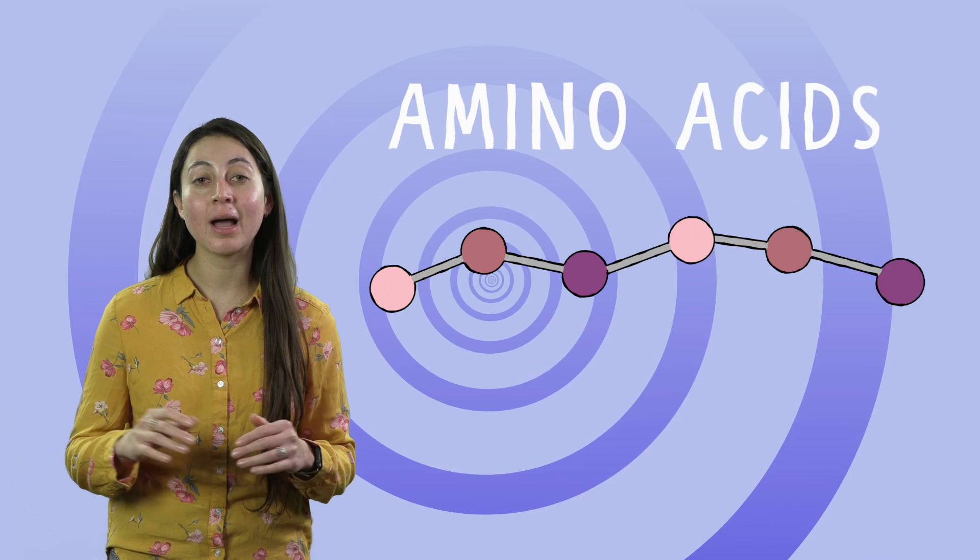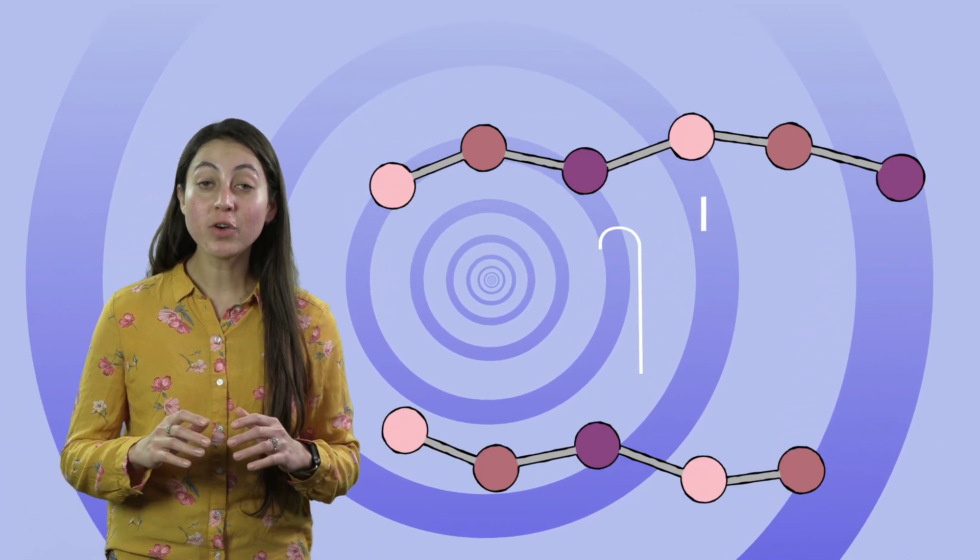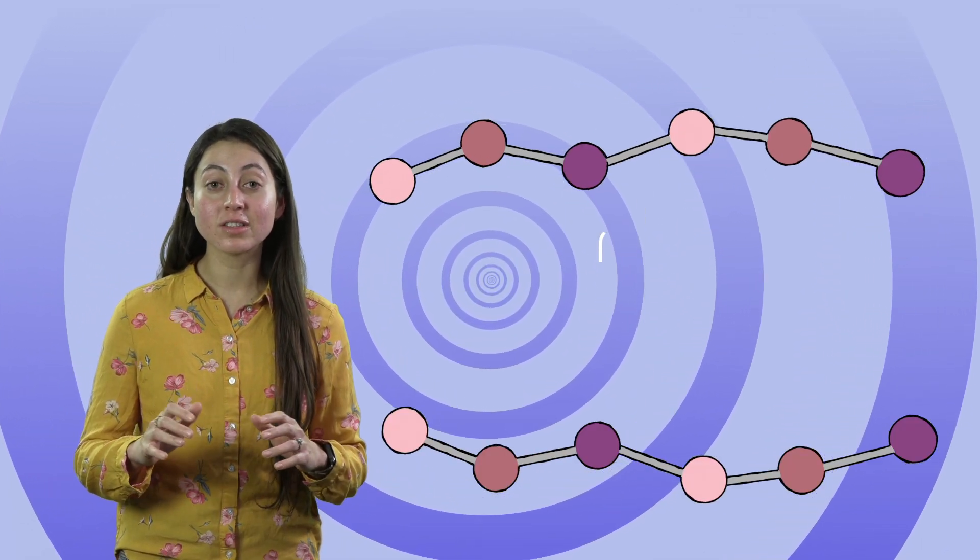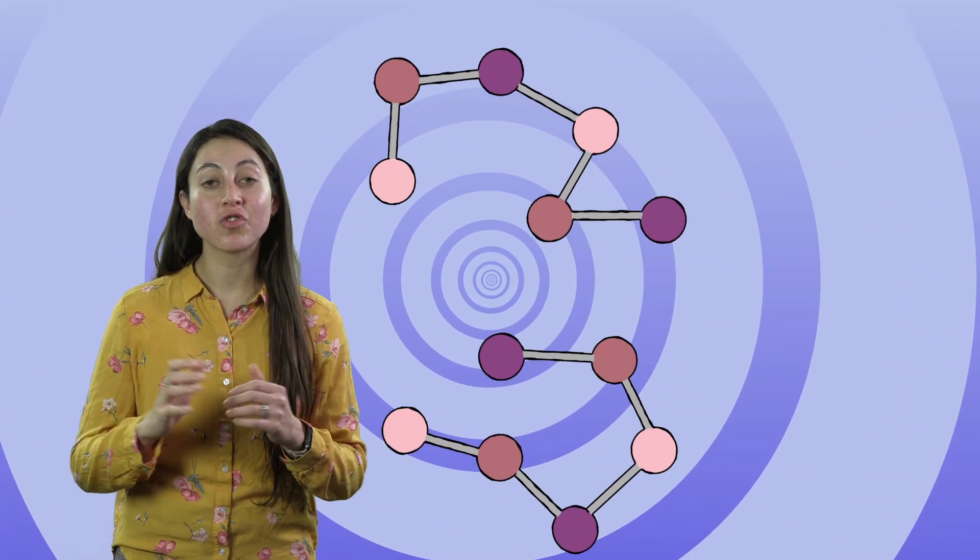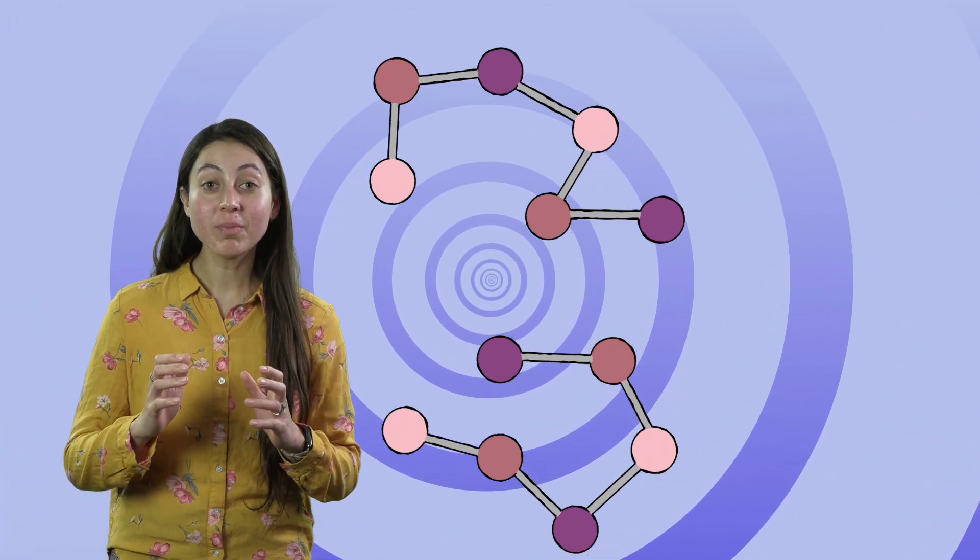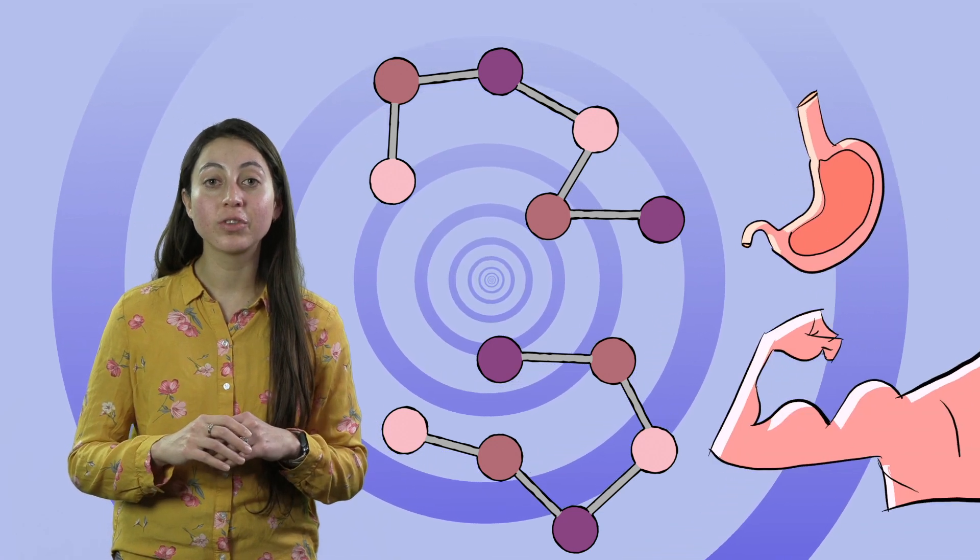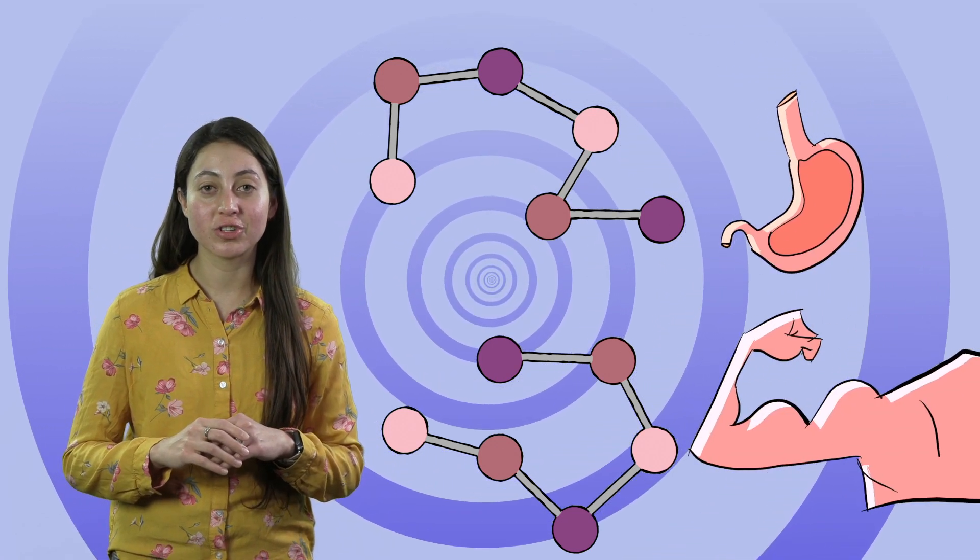Proteins are simply long strings of building blocks called amino acids. Chemical forces between the amino acids cause these long, floppy molecules to fold into unique structures. And it's the shape of these molecules which enables them to carry out the remarkable biological functions.